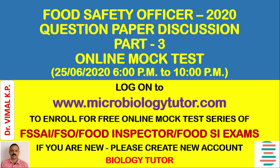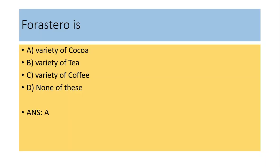First question: Forastero is a variety of — (a) cocoa, (b) tea, (c) coffee, (d) none of these. The answer is: it is a variety of cocoa.